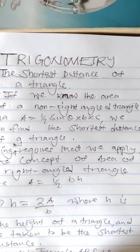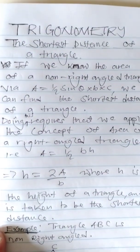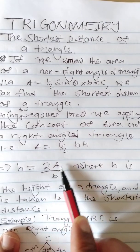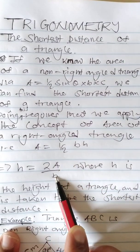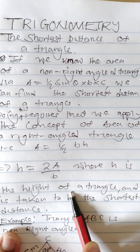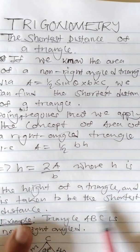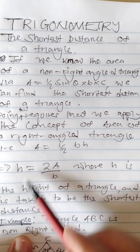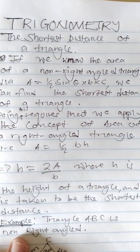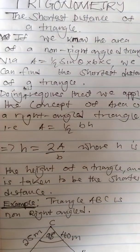which is: area equals half times b times h. Now if we are to make h the subject of the formula, what we are going to have is h equals a divided by b, where h is the height of the right-angled triangle. H is taken to be the shortest distance, so if we find h it means we'll have found the shortest distance of the triangle.